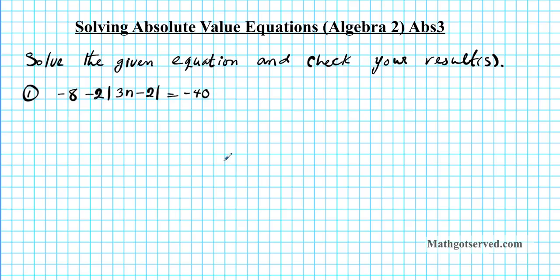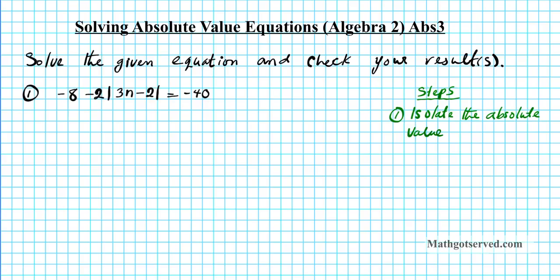So how do we solve this absolute value equation? Let's do a quick summary of the steps we're going to execute to find the value of n. Step one: your number one goal is to isolate the absolute value quantity. This quantity with the absolute value bars around it is known as the absolute value quantity, so we want to get the absolute value of 3n minus 2 isolated first.